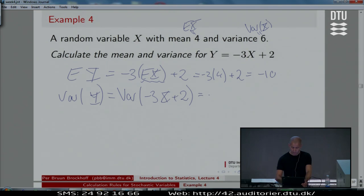That means (-3)² times the variance of X, and the plus 2 disappears. That would be 9 times the variance of X, in this case, 54.